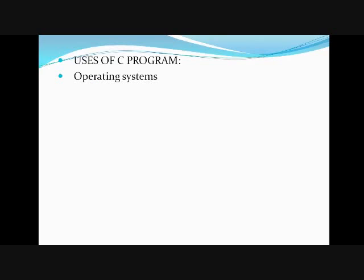One of the main advantages of C programming language is that you can build an operating system. You can create your own OS using C because it is a low-level language that can interact with the computer directly. High-level languages are quite impossible to interact with computers at the same speed. Most super programmers use C to create an OS. The first option is assembly level language, and the next layer up is C programming language.